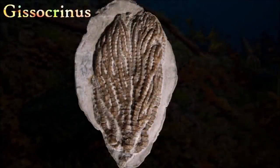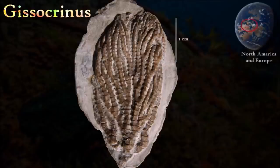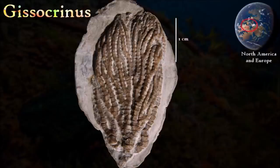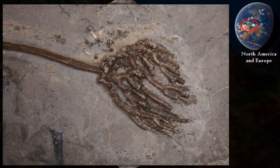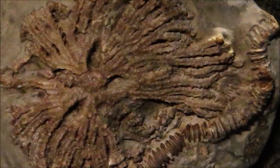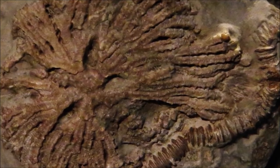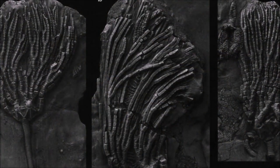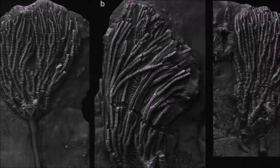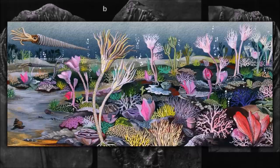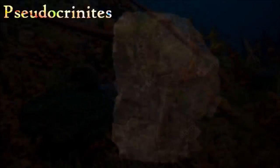The echinoderms known as crinoids, such as Gissocrinus, were marine animals related to sea urchins and starfish. Gissocrinus had a small cup made of three circles of plates; in the upper circle, the five radial plates had wide crescent-shaped upper surfaces that served as articulation points for the animal's arms extending upward from this point. A sixth plate in this circle, at the back of the cup, marked the base of a tubular structure ending with the anal opening at its top. The arms branched several times, and the branches were always equal in length.